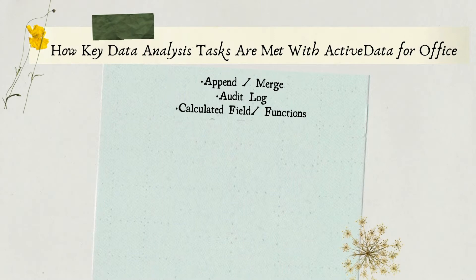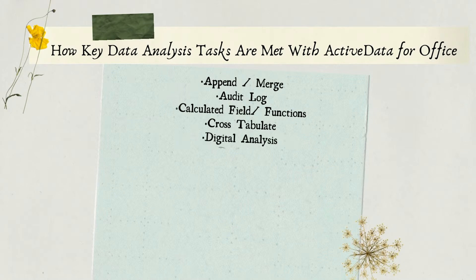Working within the file, Active Data can create a calculated field. The user can create multiple summaries, explore areas of interest, and collect numeric data by cross-tabulating character fields. It can also complete digital analysis tests and identify duplicate items within a specified field in a file. It also creates a file in other software formats for testing.